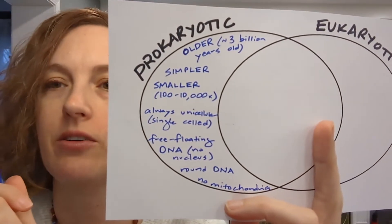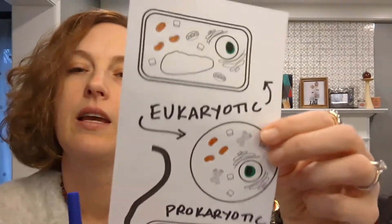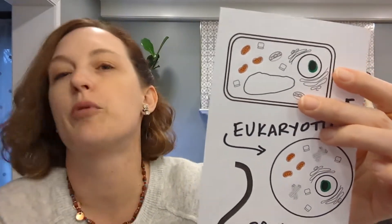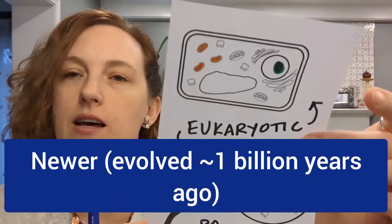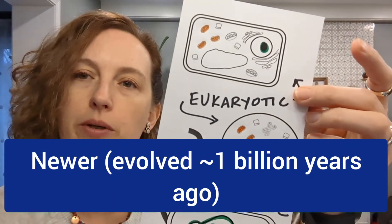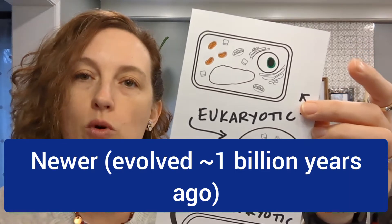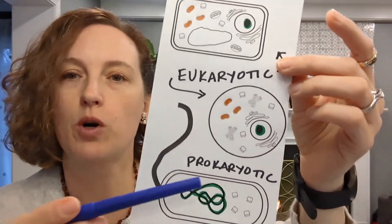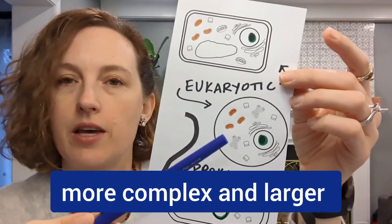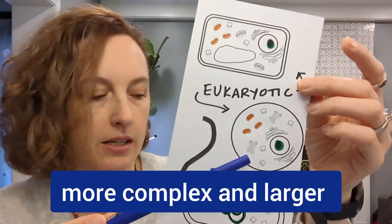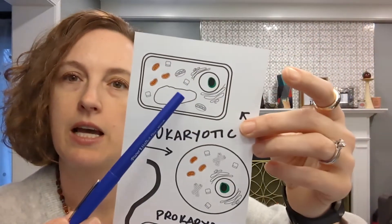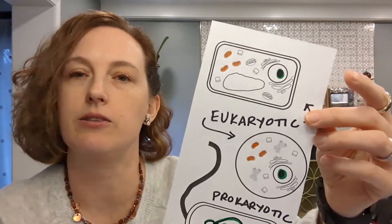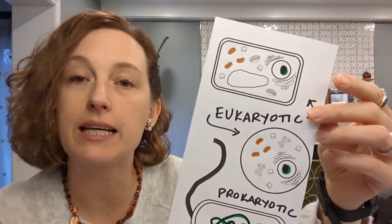Some things unique about eukaryotic cells are obvious from what we talked about with prokaryotic cells. If prokaryotic cells are older, obviously eukaryotic cells evolved much more recently — about a billion years ago, with plant and animal cells less than a billion years ago. They're also much more complex, with far more organelles, and much much larger than prokaryotic cells. Most eukaryotic cells make up multicellular organisms like us — we have about 70 trillion cells inside of us and they're all eukaryotic.